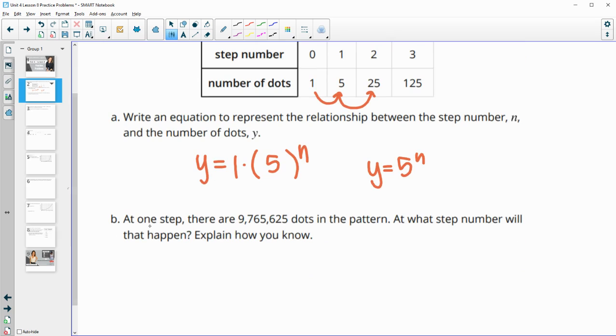At one step, there are 9,765,625 dots in the pattern. What step number will this happen at? And explain how you know. So we can just continue multiplying. There's a couple ways you could do this. Just continue multiplying by five until you get it. You could graph this in your graphing calculator and look at the table.